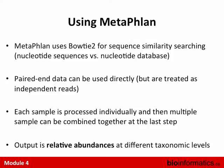MetaPhlAn uses Bowtie2 for sequence similarity searching. Bowtie2 is a DNA mapper traditionally used to map reads back to reference genomes. Mappers work well when percent identity is high — they become less reliable below about 85% identity, but for sequences that are 95–97% identical they're great: fast and accurate. They're limited to nucleotide-to-nucleotide comparison, not protein space. BWA is another mapper option, but MetaPhlAn chose Bowtie2.